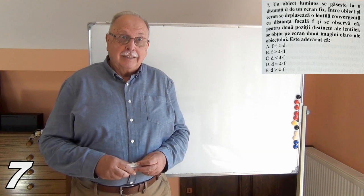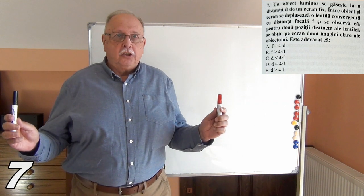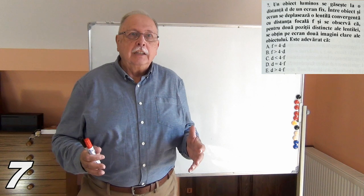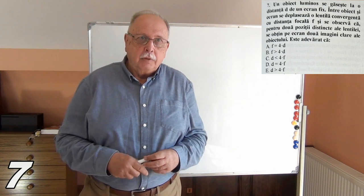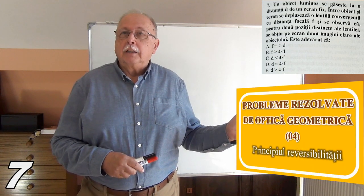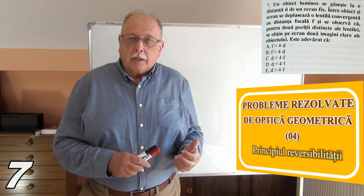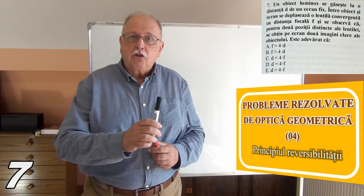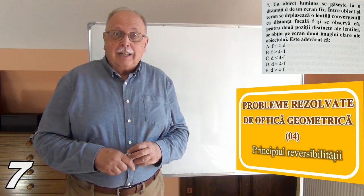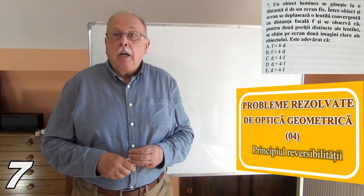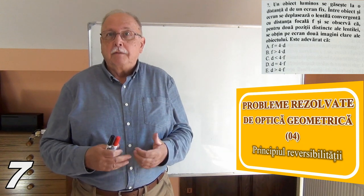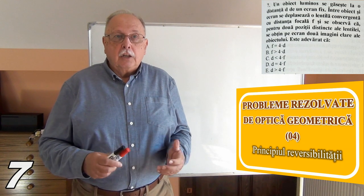A luminous object is at distance D from a fixed screen. A converging lens with focal length F is moved between them, and two distinct positions are found that produce a clear image on the screen. As shown in a related video on geometric optics problems 4, the distance between the two positions is four times the focal length. For two clear images to exist, we need the condition D > 4F. The correct answer is E.